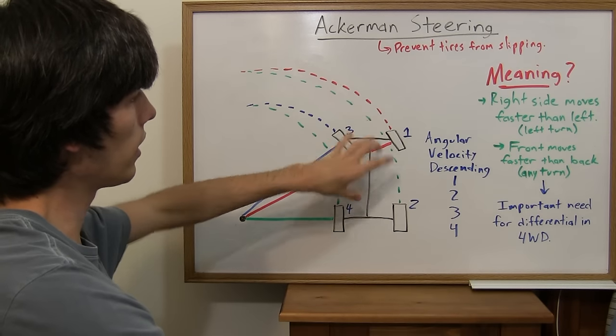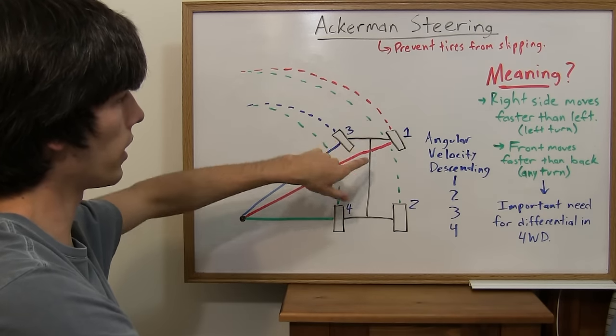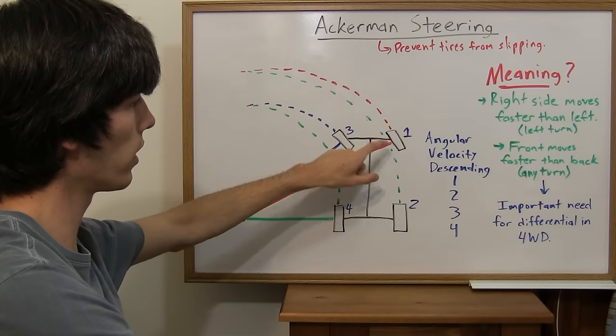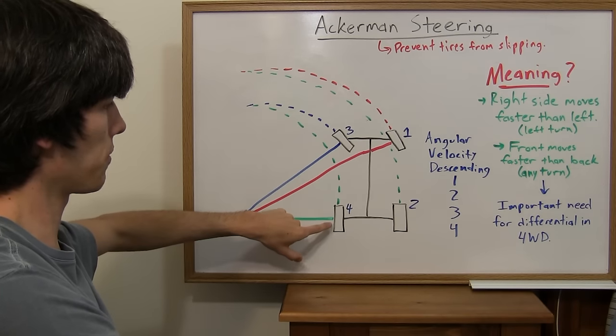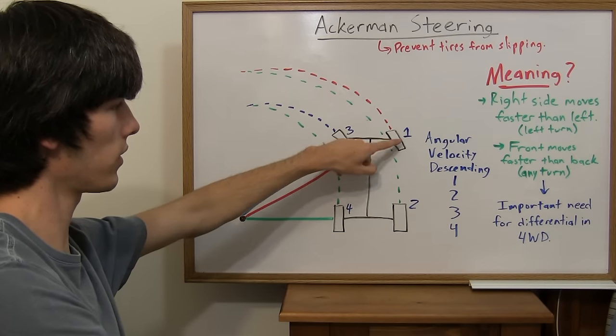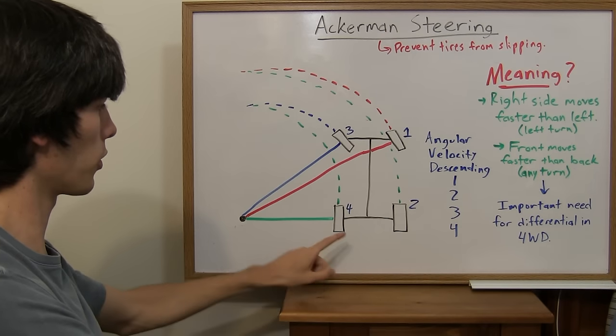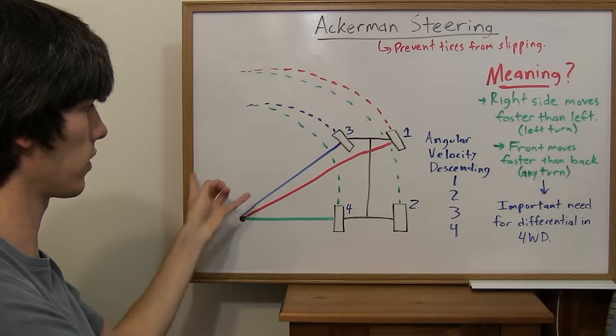In descending order, the angular velocity of each tire goes from 1 to 2 to 3 to 4. This is rotating the fastest, and this is rotating the slowest, because it's got the smallest distance to travel.